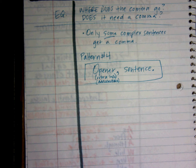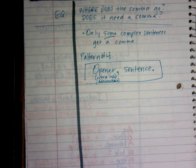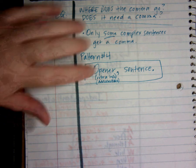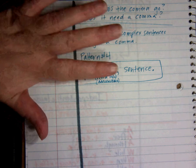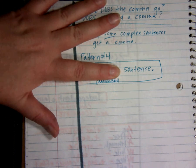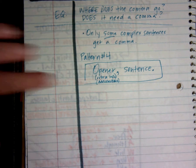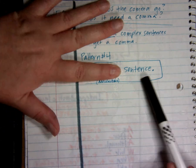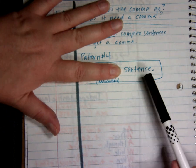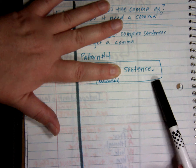So what does that mean — extra info? If something is extra, what does it mean? Not really needed. So if I cover it up, what am I left with? A sentence. If it's extra, it means I don't need it — it means I could cover it up and I would still have a complete sentence: subject, verb, complete thought. This is how you can tell.